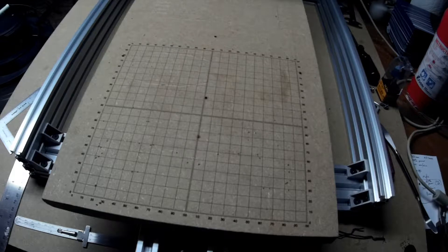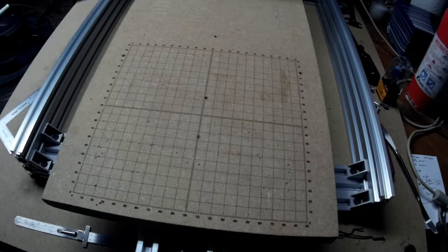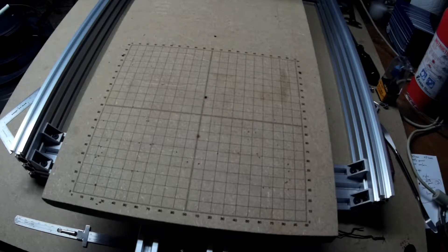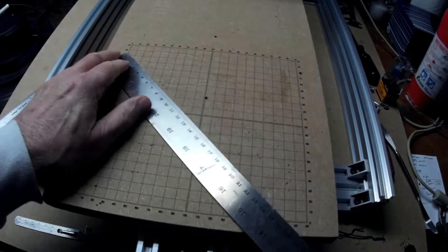And I decided, okay, I'll use the old carpenter's trick of measuring the diagonals, and if the diagonals are equal, then it should be a perfect square.